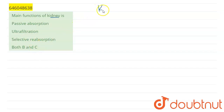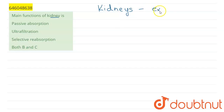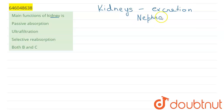We know that kidneys are the excretory organs of our body. A pair of kidneys is present in our body and these kidneys help in excretion. Nephrons are the functional units of kidneys, and through the nephron the processes of filtration and selective reabsorption occur.